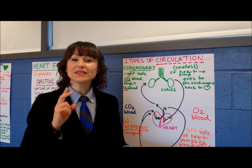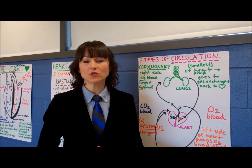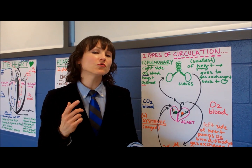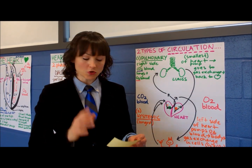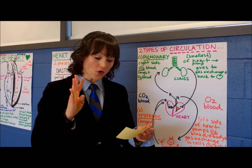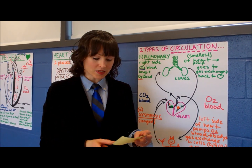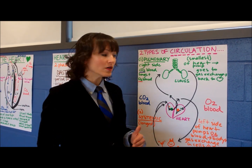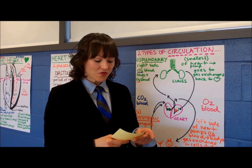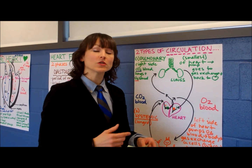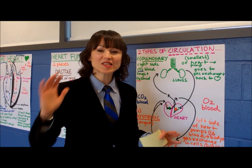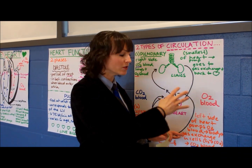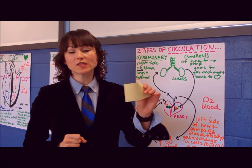Number three: find your pulse over one minute. The easiest way is to count for 15 seconds and multiply by four. Number four: give me four differences between the two types of circulation. Think about things like size and which side of the heart is used. Make a nice table with a title, organize your information, and identify what's important — four differences in a nice table. This is due next class.